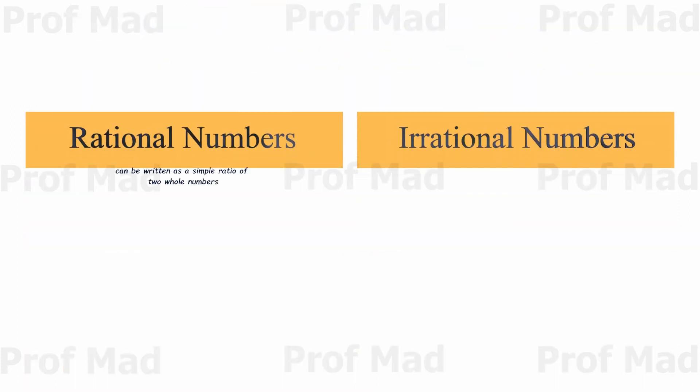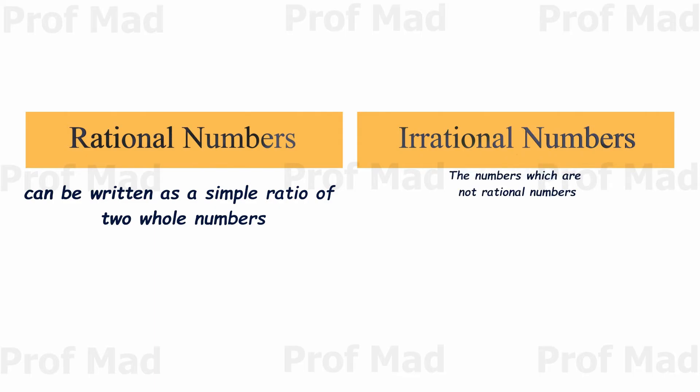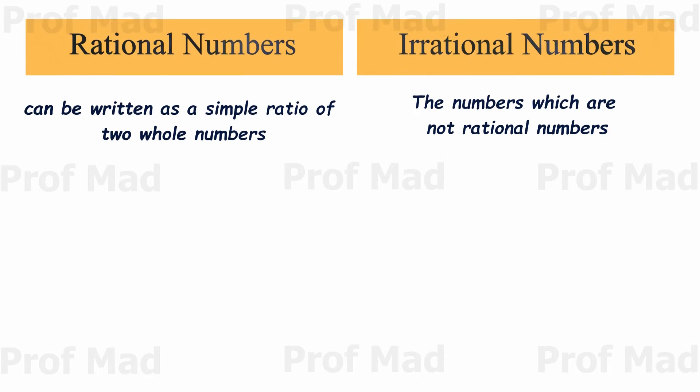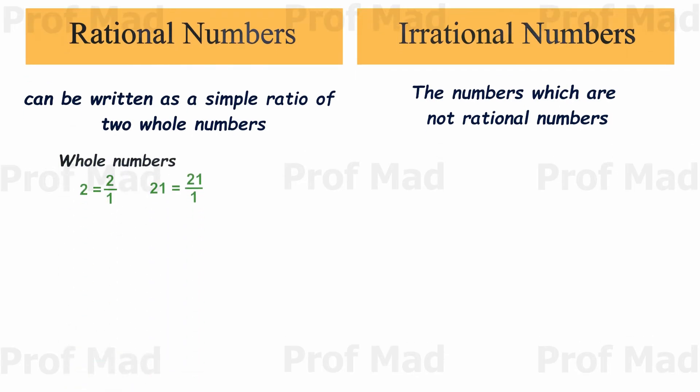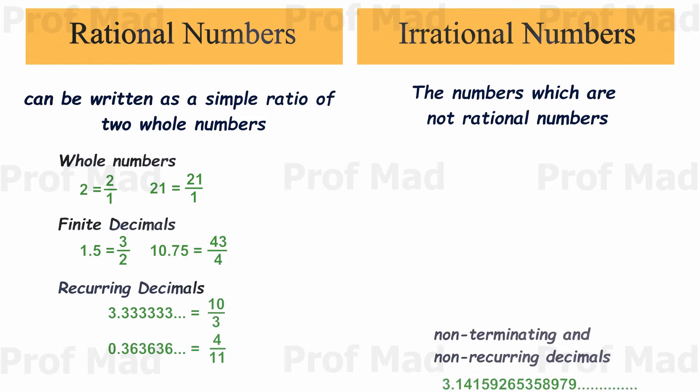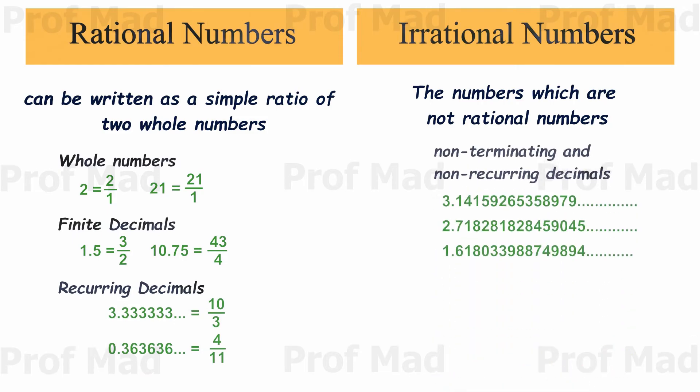To go further, we need to know about rational numbers and irrational numbers. Numbers that can be written as a simple ratio of two whole numbers are called rational numbers. But there's another type of number called irrational numbers, which cannot be expressed as a fraction of whole numbers. Whole numbers, finite decimals, and recurring decimals are all rational numbers. Irrational numbers are non-terminating and non-recurring decimals.